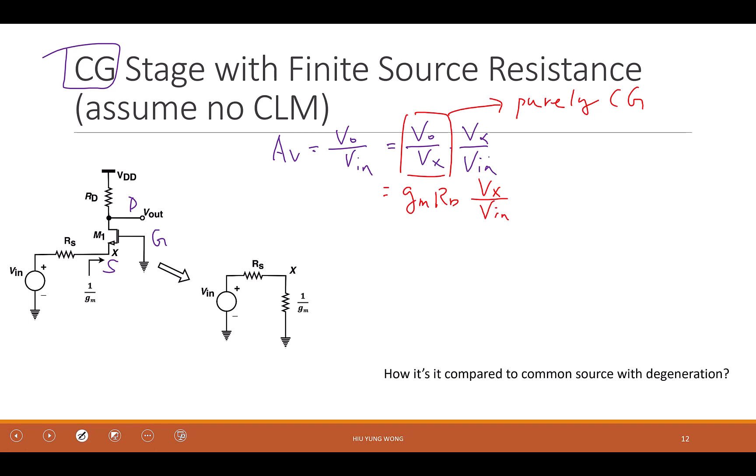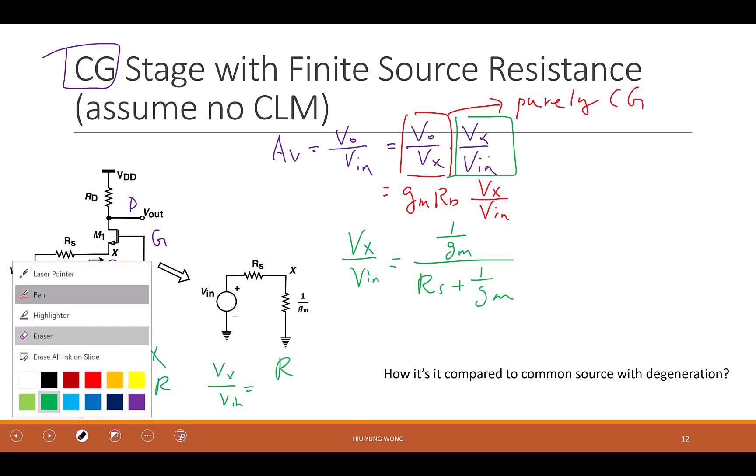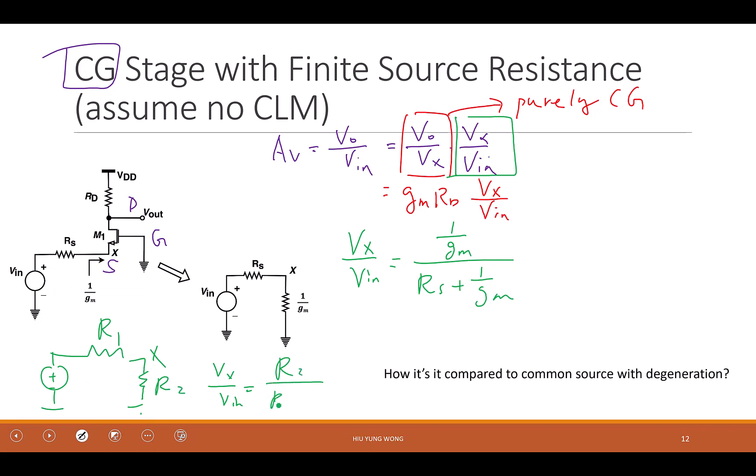So with this, then I'm able to find out the relationship between Vx and Vin, because Vx divided by Vin is just a potential divider. One over GM divided by RS plus one over GM. Do you see this? It's just like this, potential divider R1, R2. So Vx divided by Vin equal to R2 divided by R1 plus R2. That's what I'm doing. Now R1 is RS, R2 is one over GM.